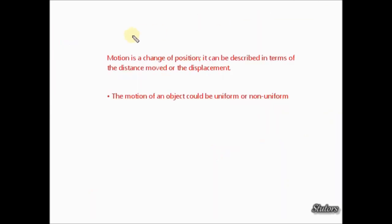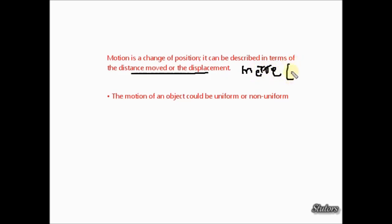That's all for the first video. In this video you have learned that motion is a change of position and it can be described in terms of distance moved or displacement. The SI unit used for distance as well as displacement is meters, which is the SI unit of length, denoted by the small letter 'm'. The motion of an object could be uniform or non-uniform depending on the distance it covers in a unit time — that term is called speed or velocity, which we will cover in the next video.